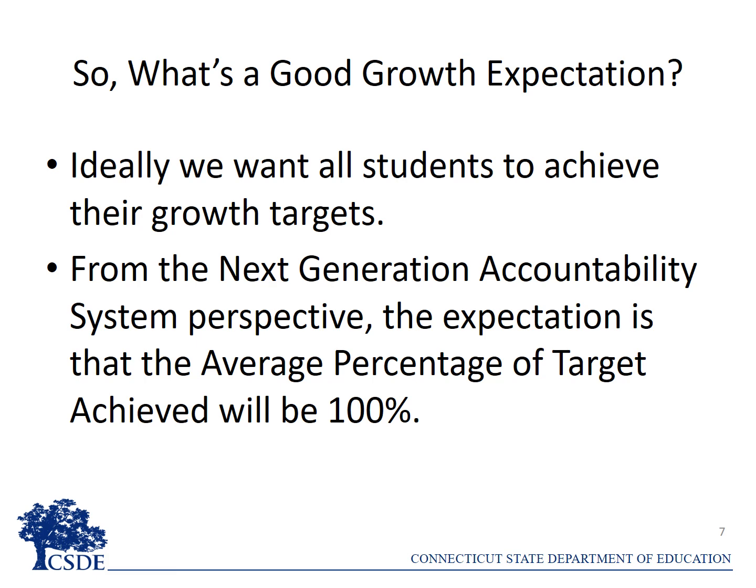Now that you know what the two statistics mean, what is a good growth expectation? Of course, ideally, we want all students to achieve their growth targets. In the next generation accountability system, the bottom line growth expectation is that the average percentage of target achieved will be 100%. If this is achieved, it would mean that students are, on average, achieving 100% of their respective growth targets.